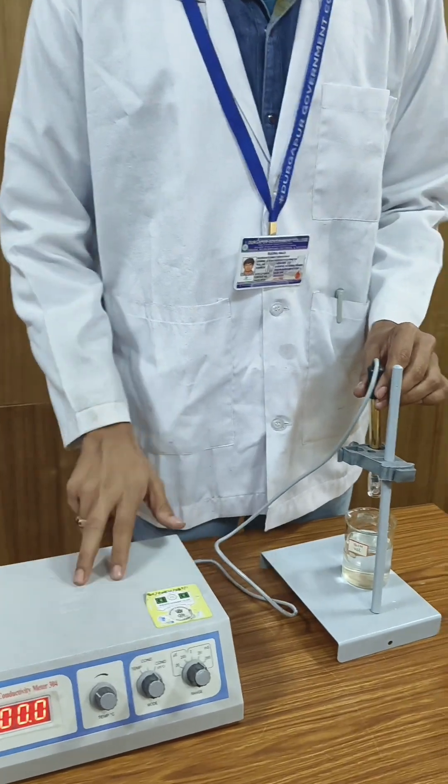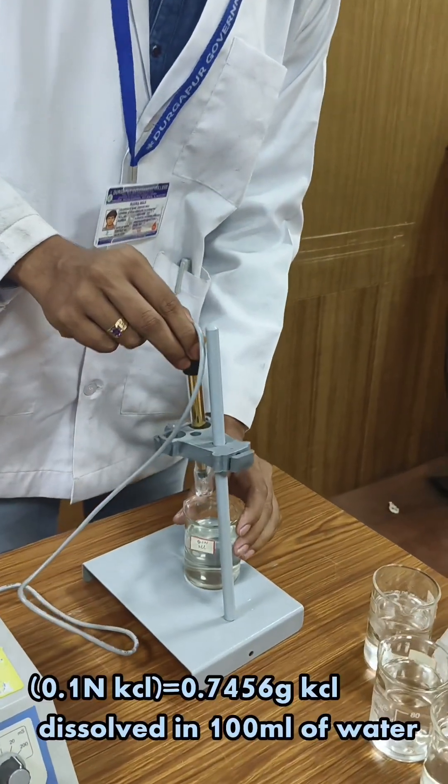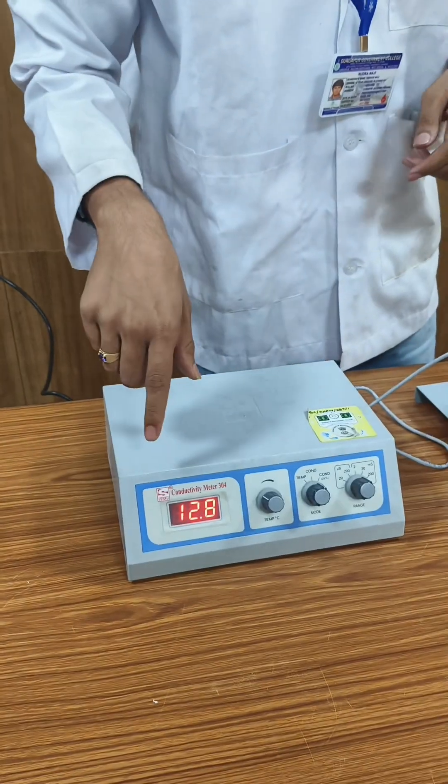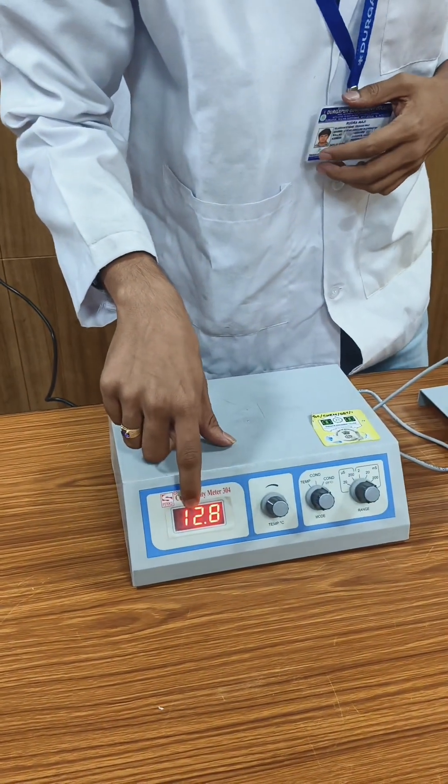Now we have to calibrate the instrument by dipping the electrode into a 0.1 normal KCl solution. Now we can see the value is 12.8 microsiemens.